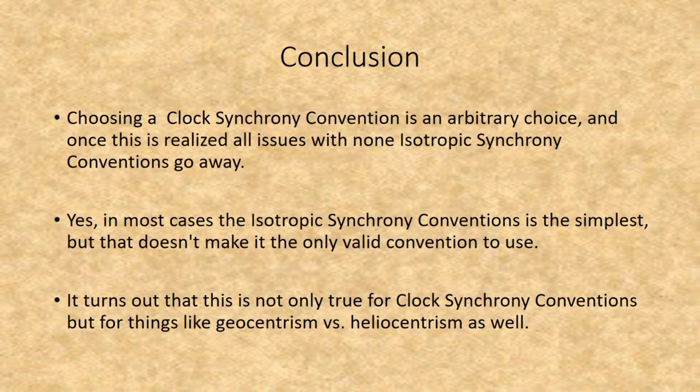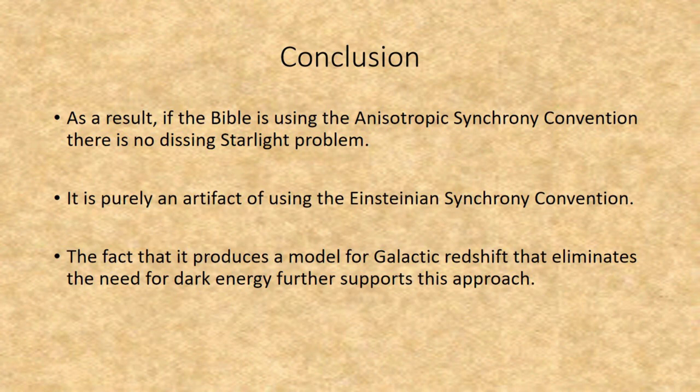Yes, in most cases the isotropic synchrony convention is the simplest, but that does not make it the only valid convention to use. This is true not only for clock synchrony conventions but for things like geocentrism versus heliocentrism as well. As a result, the Bible is using the anisotropic synchrony convention. There is no distant starlight problem — it is purely an artifact of using the Einsteinian synchrony convention. The fact that it produces a model of galactic redshift that eliminates the need for dark energy is further support for this approach.